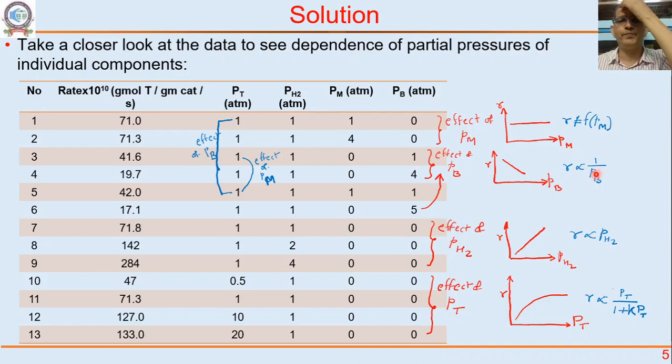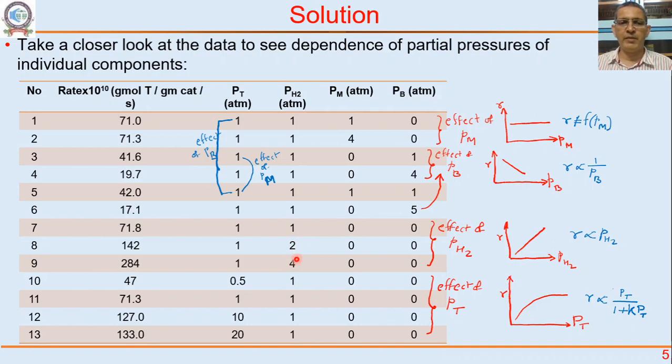Look at these three rows. Partial pressure of hydrogen increases from 1 to 2 to 4 — a factor of 4 — and rate increases from 71.8 to 142 to 284, also increasing by a factor of 4. From 71 to 142 is almost doubling, and from 142 to 284 is almost doubling again. So rate is proportional to partial pressure of hydrogen.